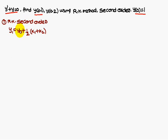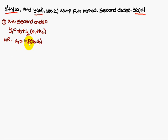The RK method second order formula is: y1 = y0 + (k1 + k2) / 2, where k1 = h · f(x0, y0) and k2 = h · f(x0 + h, y0 + k1).